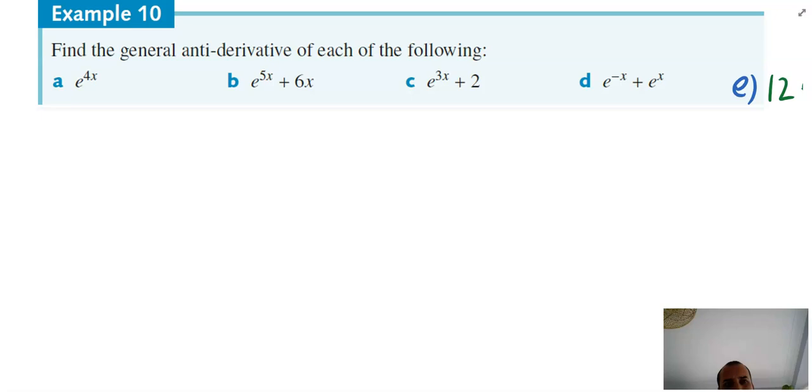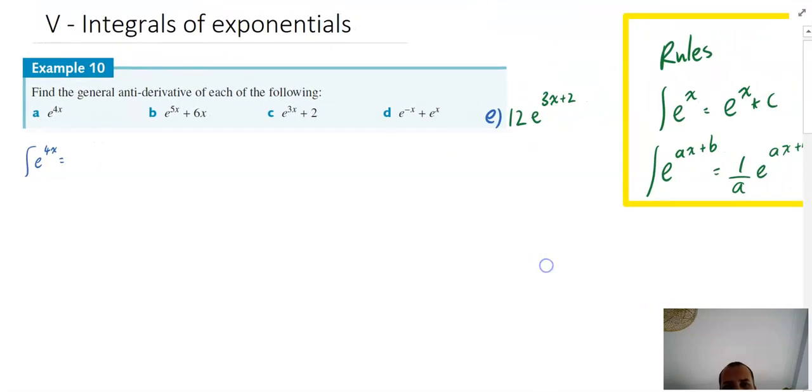It should be really straightforward. We're finding the general antiderivative or integral of each of the following. So the integral of e to the 4x is going to be equal to... Now let's look at our rules here for a second. This is kind of like e to the ax plus b, there's just no plus b there. So we need to take that 4 and put it as 1 over, 1 over 4, and e to the... And that 4x will stay there now, plus c. That's as easy and straightforward as it is.